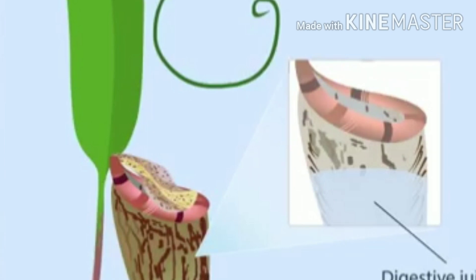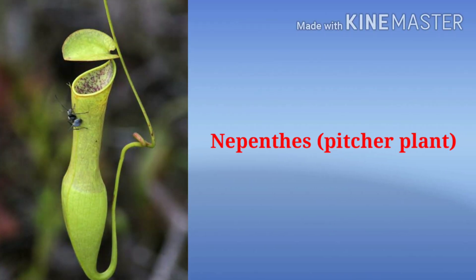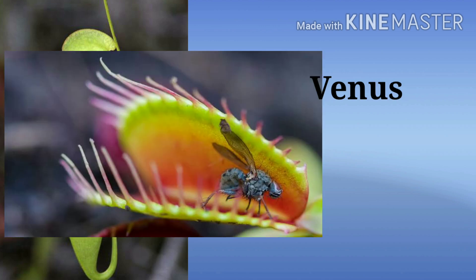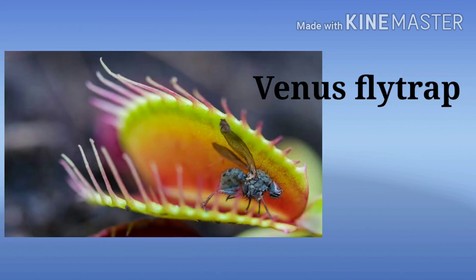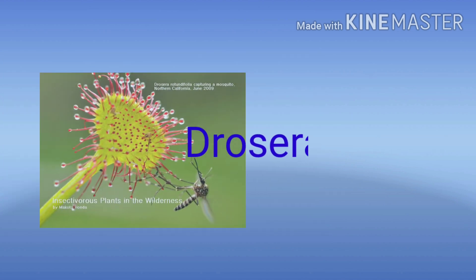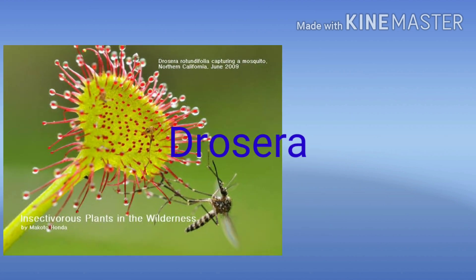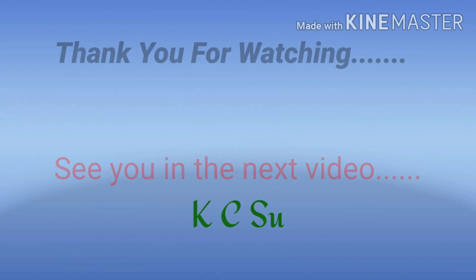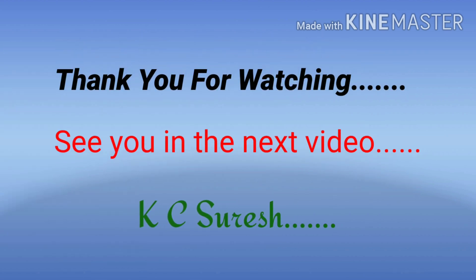Therefore this plant is known as an insectivorous plant. The scientific name is Nepenthes. Other insectivorous plants include the Venus flytrap and Drosera. So insectivorous plants are insect-eating plants.